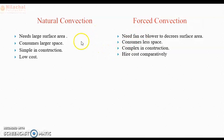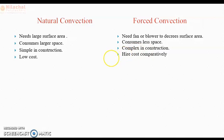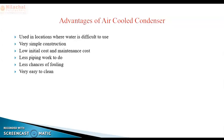In natural convection, the construction is simple as no additional apparatus is required to move the air. In forced convection, the construction is more complex. The natural convection type has a low cost, while the forced convection type has a higher cost because a fan and damper are required.